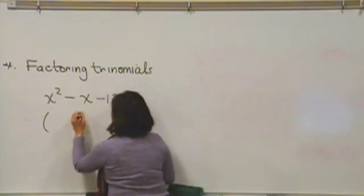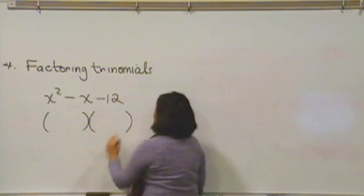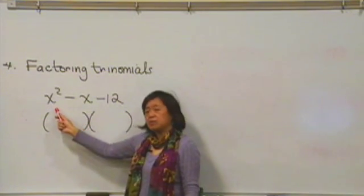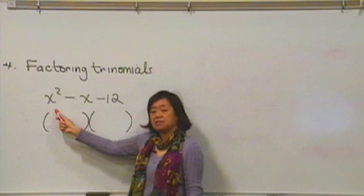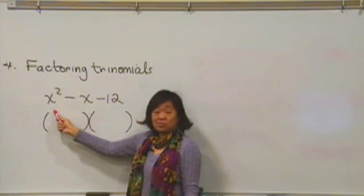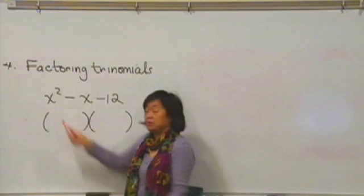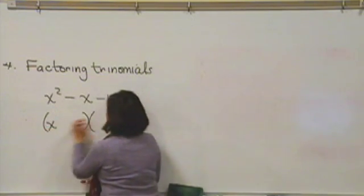What you do is you put down two parentheses. And you look at the first term and ask yourself, how could I split that up? How could I write that as a multiplication? In this one, we're lucky. The only way you can split up x squared is by putting an x and an x.